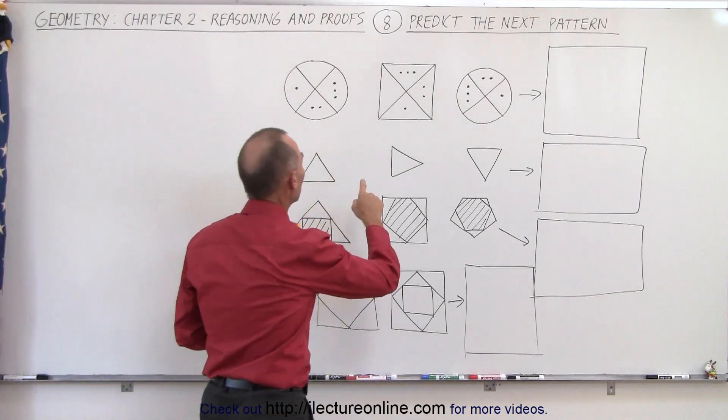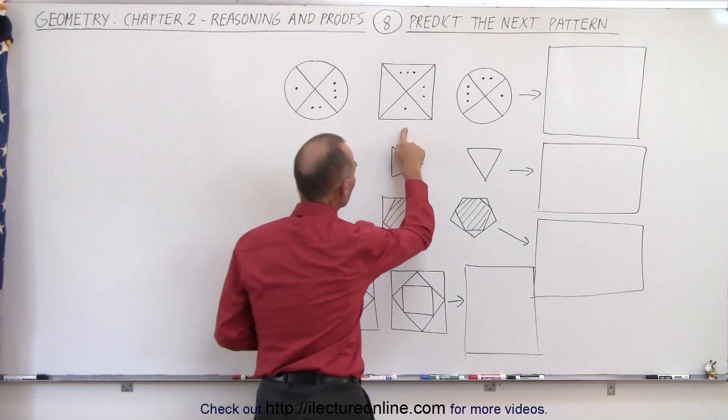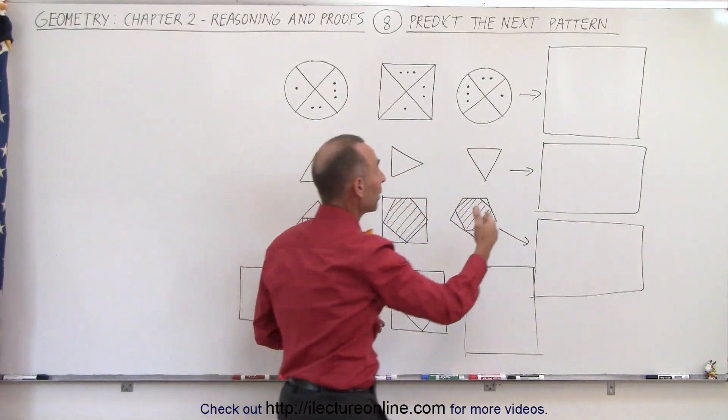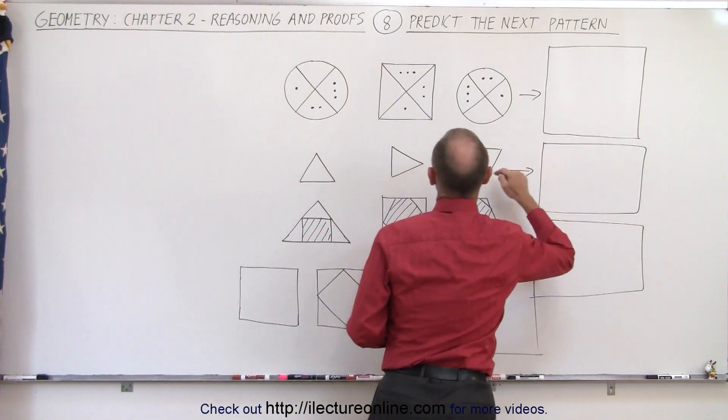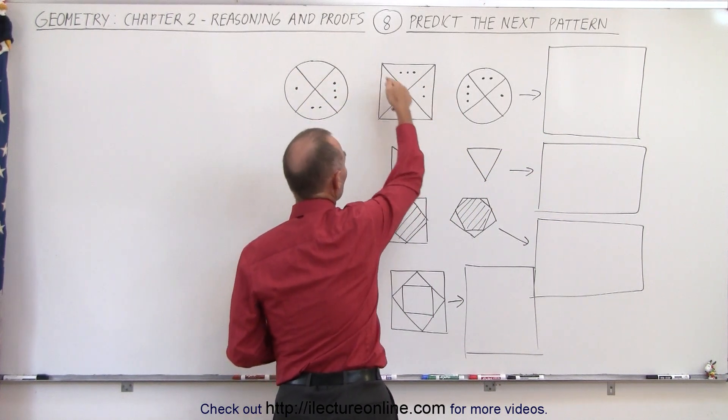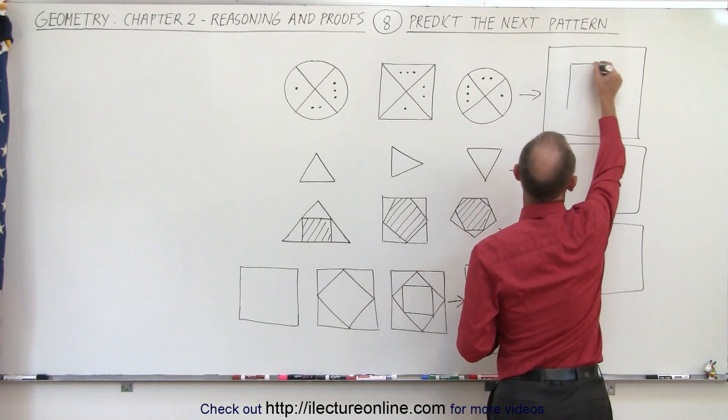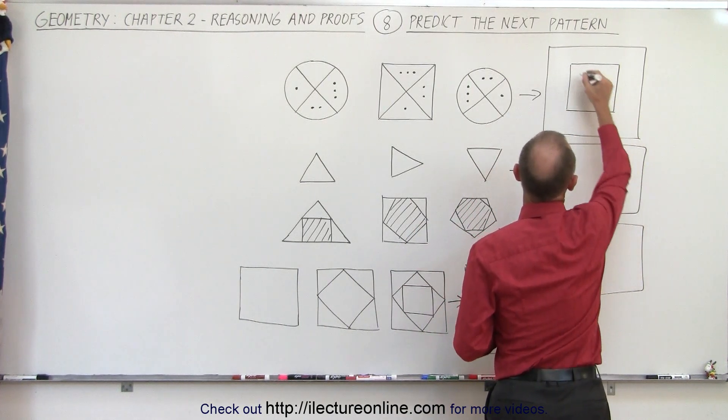On the first series here we have a circle, a square, a circle, and presumably that pattern holds. We probably will need a square there. Also notice that all of them are kind of divided with those two lines across. So I would assume that we have a square here and we have to draw the two diagonal lines.